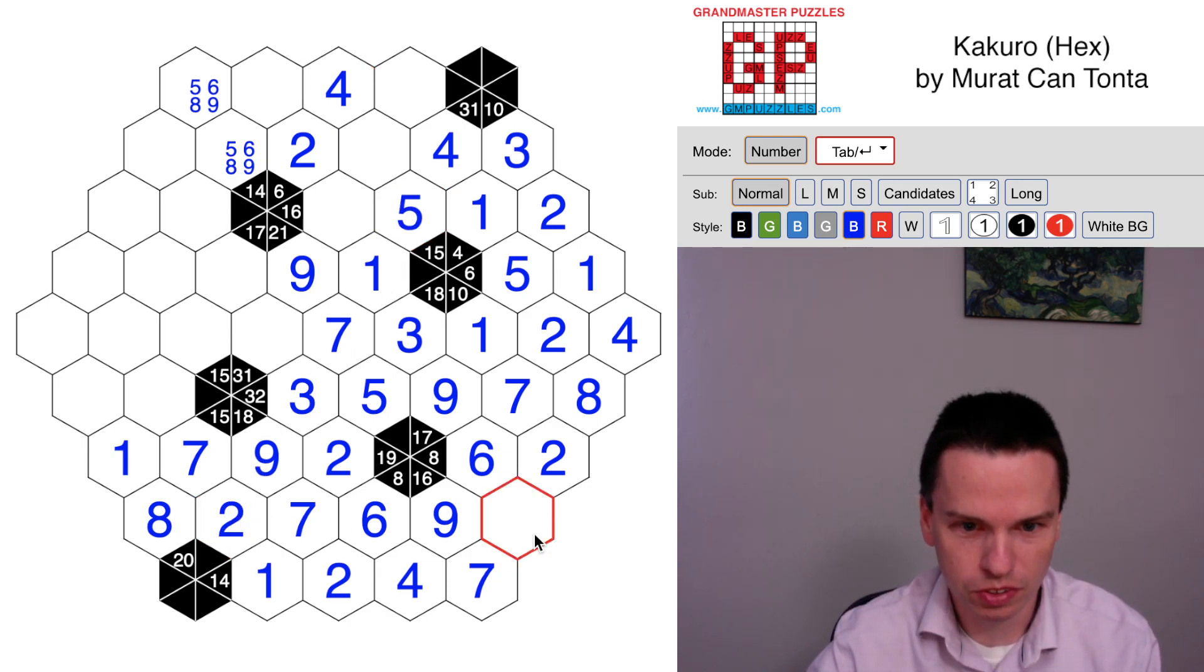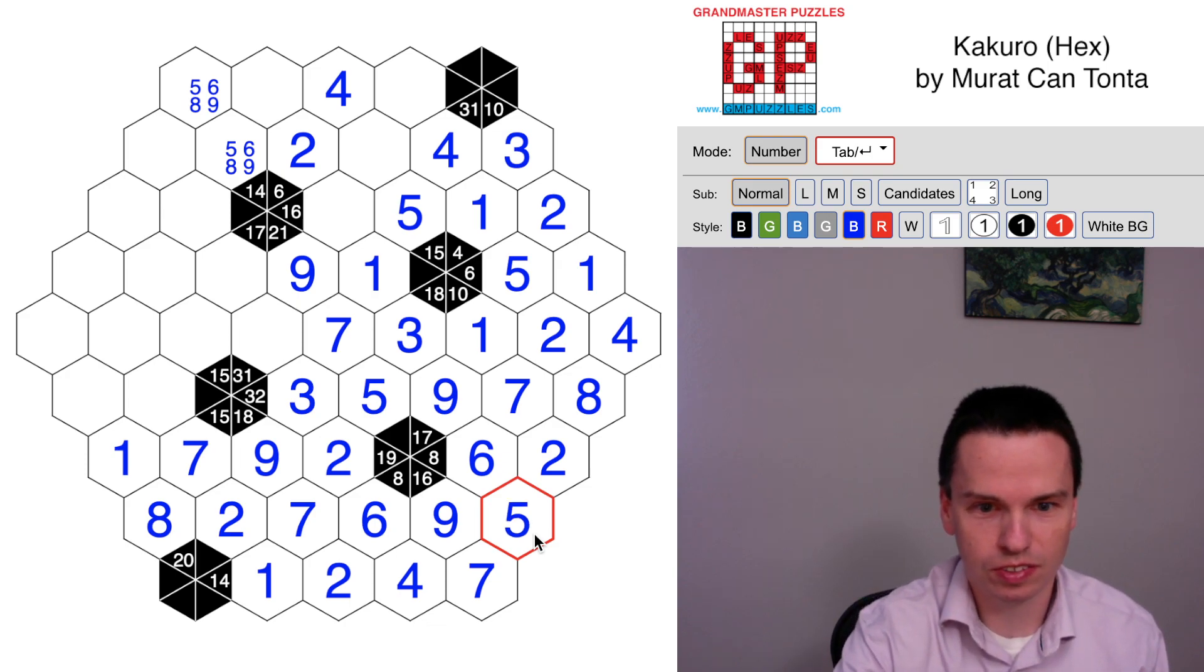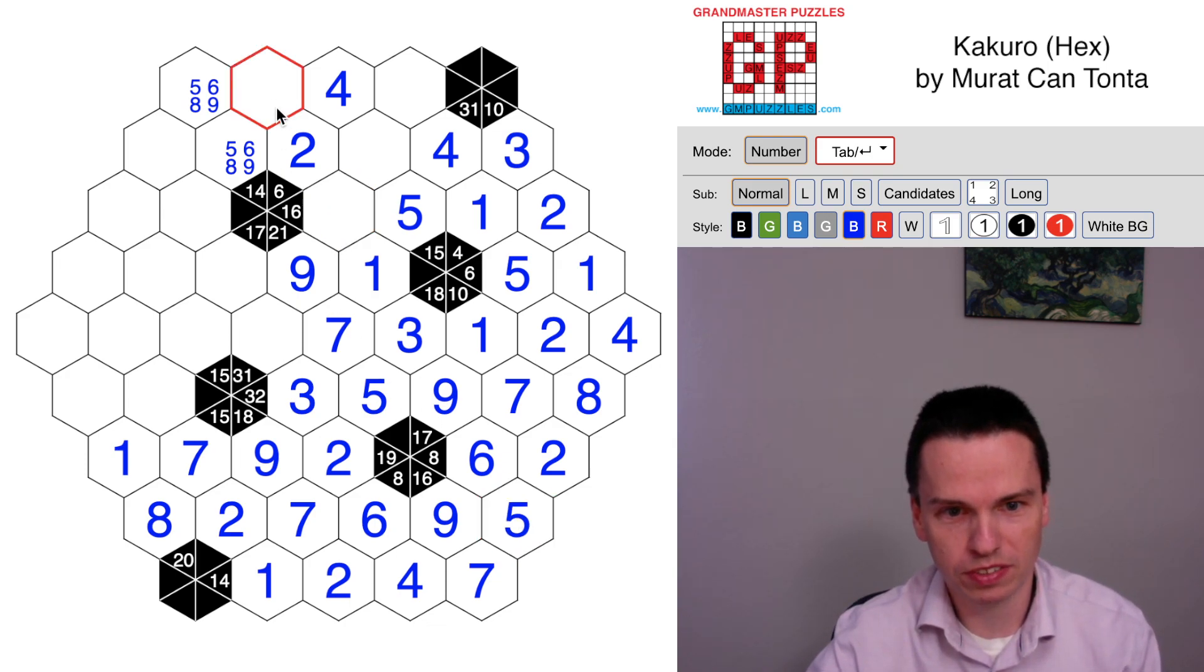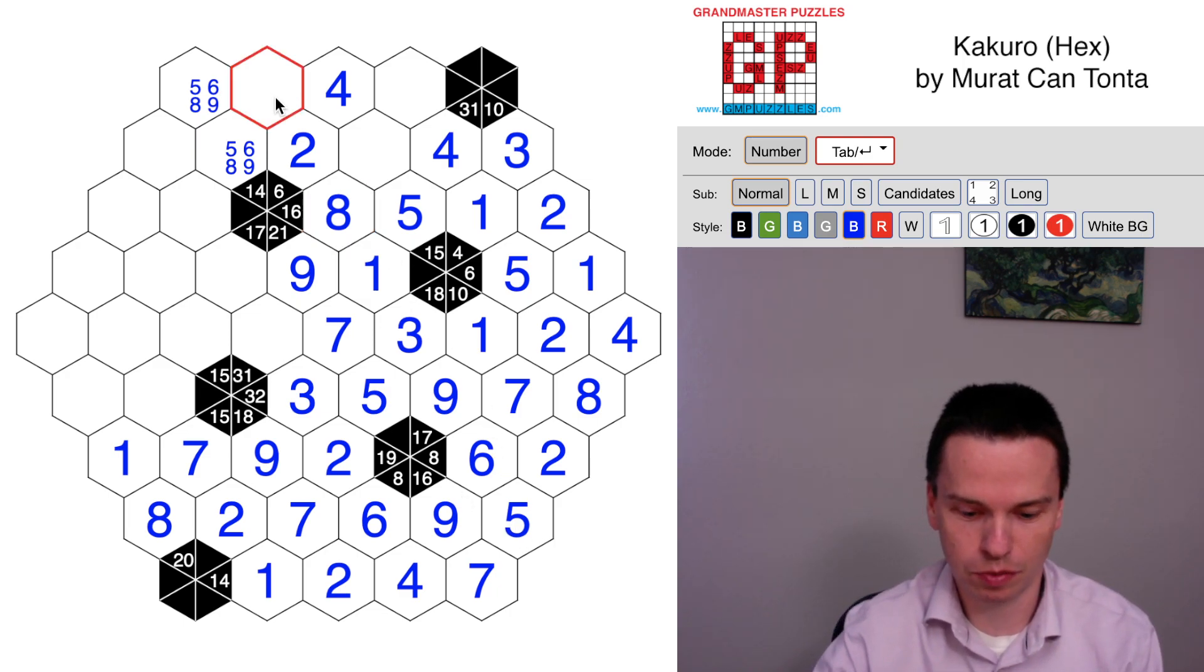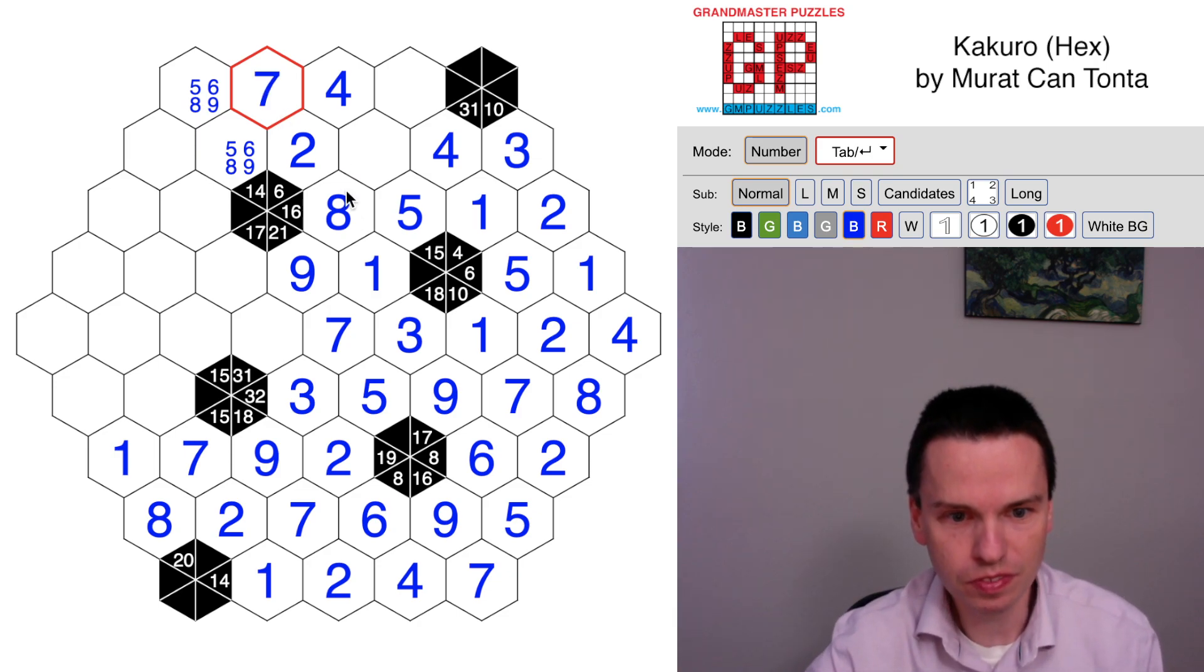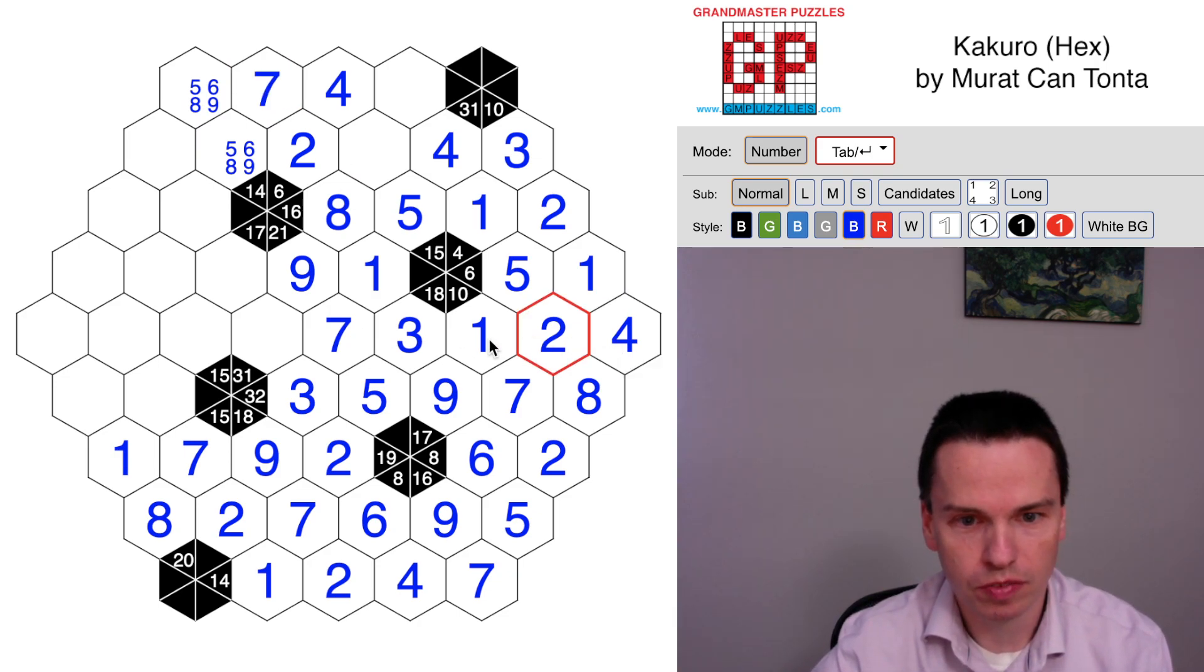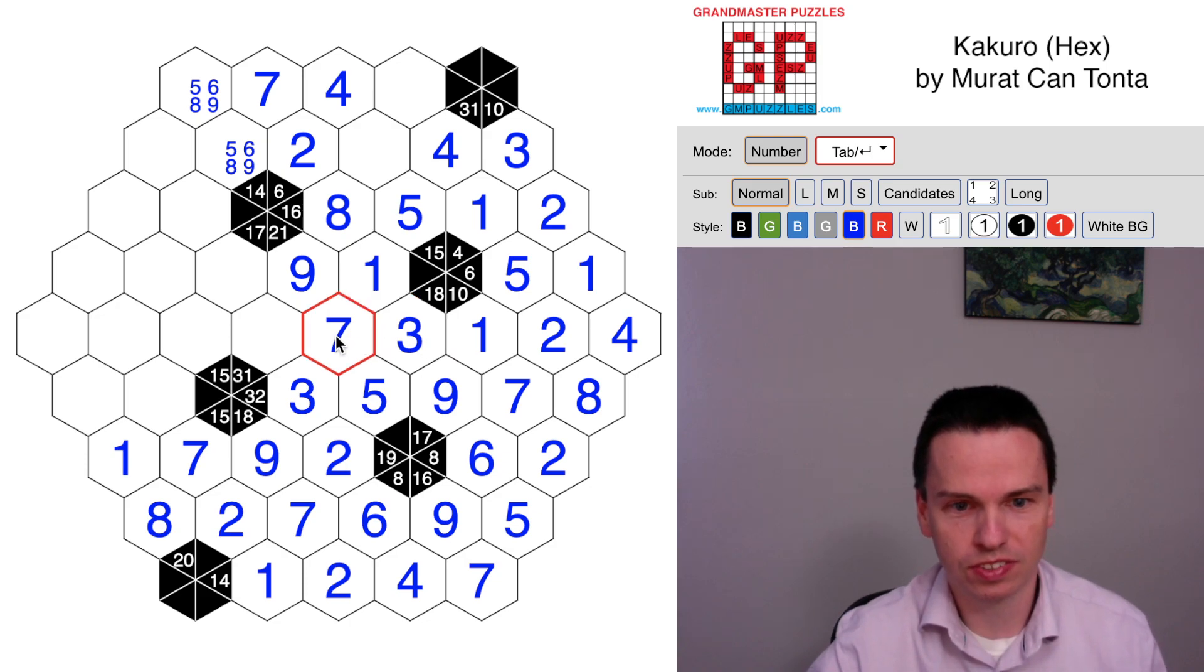This then gives us a 5 and a 2. This cell sees 1, 2, 3, 4, 6, 7, 8, 9. So this is a single for a 5. And this whole space now, we've got work coming across. This is an 8 coming across. You have all the digits but 4 and 7 in the space because this is an 8 cell direction and the 4 is up above. So this has to be a 7.